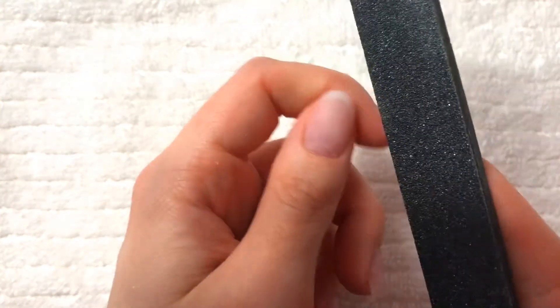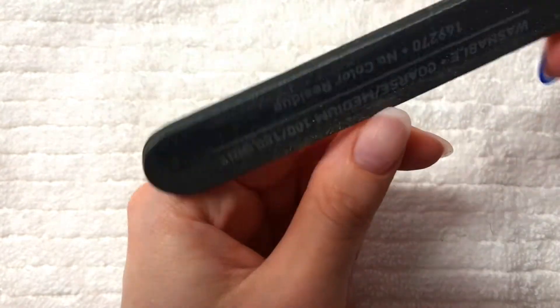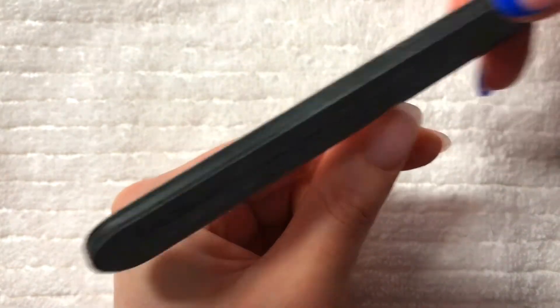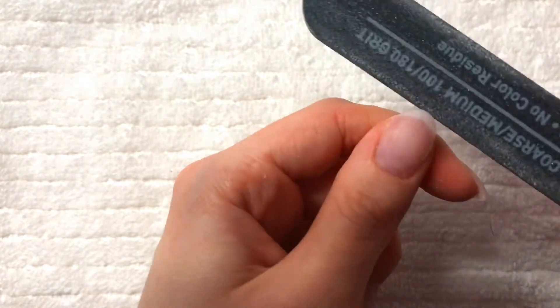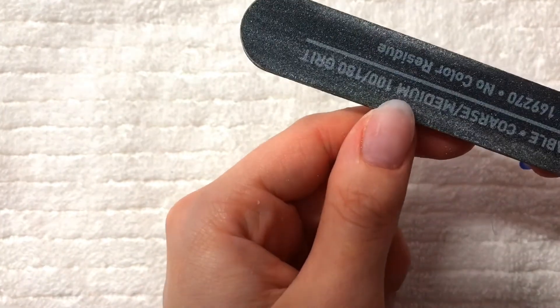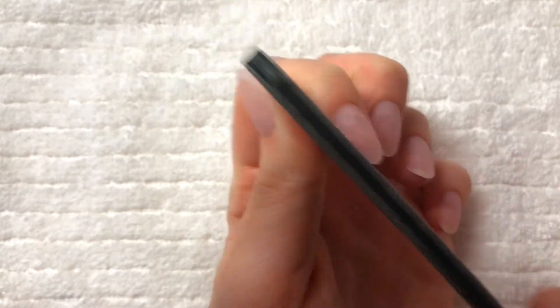Once it's set, I'm going to go in and file and shape my nails. You know when the dip powder is set because when you tap on it, it makes a loud clicking noise. You want to make sure that the dip powder is set before going in and filing it. Otherwise, you will file off chunks of the dip powder.